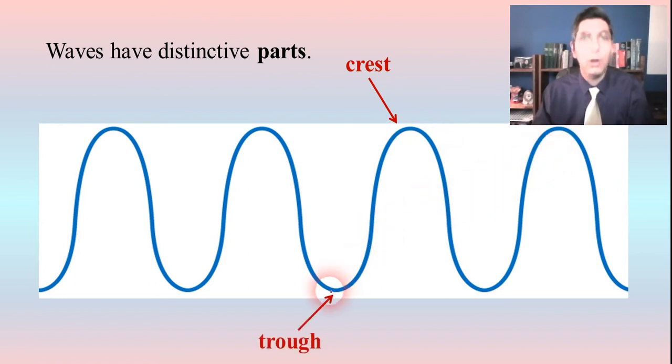Now the bottom part of the wave is called the trough. And so we have a few of those here. It looks like one, two, three, four, five troughs are pictured here in this part of the wave that's in this picture here.